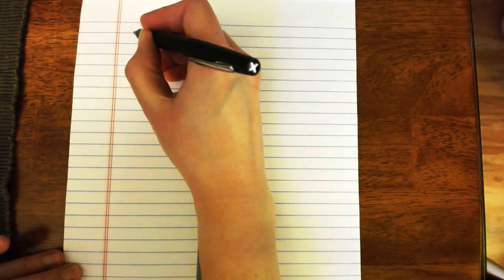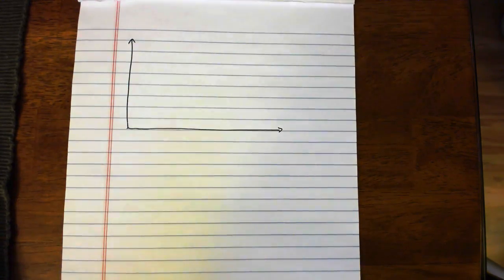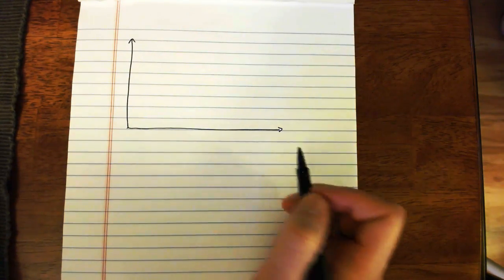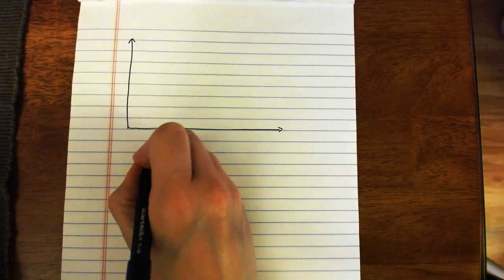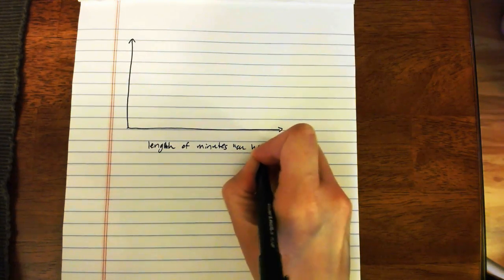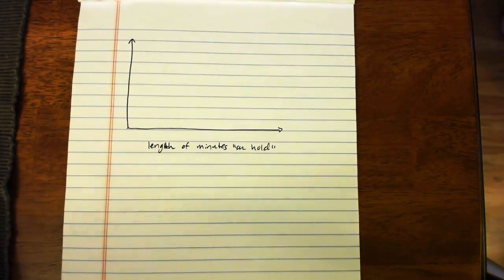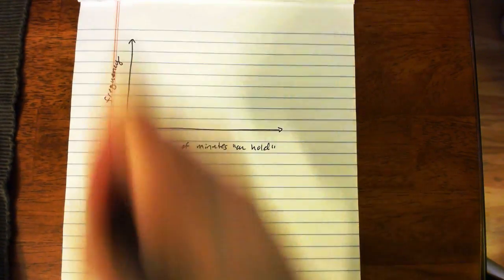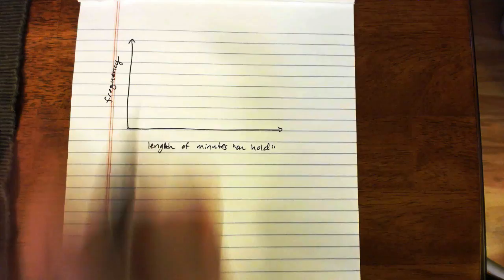In order to make a histogram, you need two axes. You're going to have a horizontal axis and a vertical axis. And of course, if you want this to look really nice, you would do this on graph paper with a straight edge or you could use a software package. And then your horizontal axis will be labeled with the name of your variable. And in this case, our variable was length of minutes on hold. The y-axis will just be labeled frequency.